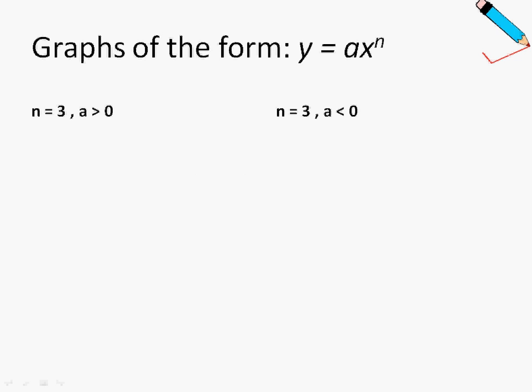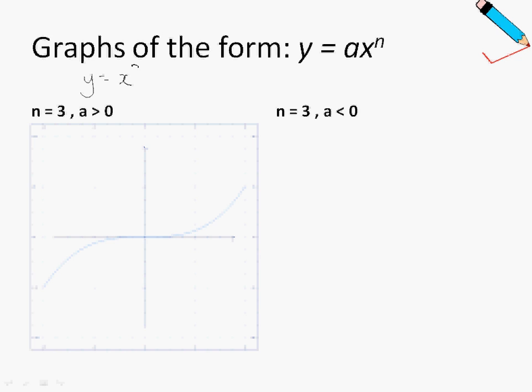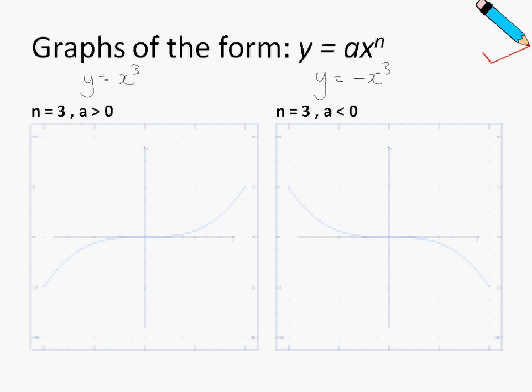When n is 3, this is what we call a cubic graph. The graph of y equals x cubed will look like this, and the graph of y equals negative x cubed will look like this.